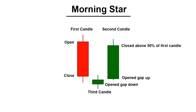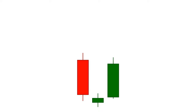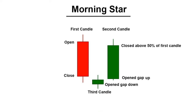When a Morning Star candlestick pattern appears at the bottom of a downtrend, it can be an indication that a reversal trend is going to take place. Therefore, most traders buy securities to profit from the trade. They can only make money when the pattern becomes 100% perfect. Let's take a look at the conditions that form a 100% perfect Morning Star candlestick pattern.